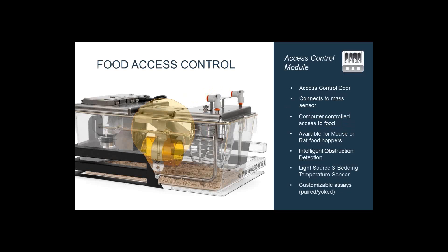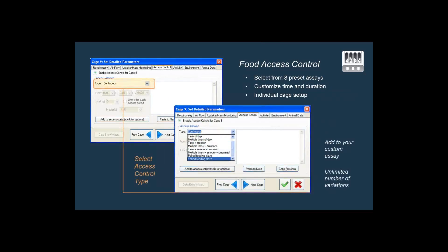Let's move on to food access control. There's a door which simply closes to prevent access to the food when ordered to do so. If the mouse or rat is in the way, it will automatically sense the additional resistance and politely withdraw for 10 seconds or so and then try again until it succeeds. So you can do all kinds of customizable assays — you can set the system to allow access at certain times of day, times and durations, times and amount consumed. You can have pad feeding, yoked feeding, and all of the usual things. We can certainly add additional capabilities to the system if someone comes up with an unusual assay we don't currently support.